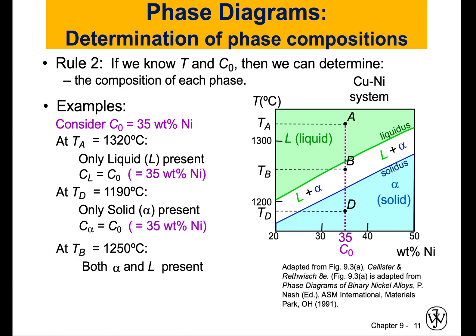There is a rule that we use, and that rule is drawing something called the tie line. The tie line is a horizontal line that passes through your point and intersects with the liquidus line and the solidus line. Once you have this tie line — again, it's a horizontal line that passes through your temperature and concentration — it intersects with the liquidus line and the solidus line. These two intersection points are very important in identifying the composition of your phases.